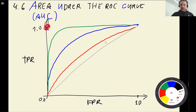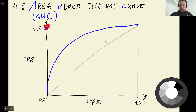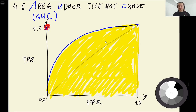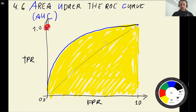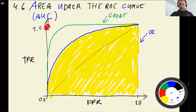The area under this curve can tell us how good our model is. If our model is very close to the ideal point, its curve will cover a larger area. For example, a great performance might have an area under the curve of 0.9, while okay performance might have 0.8.